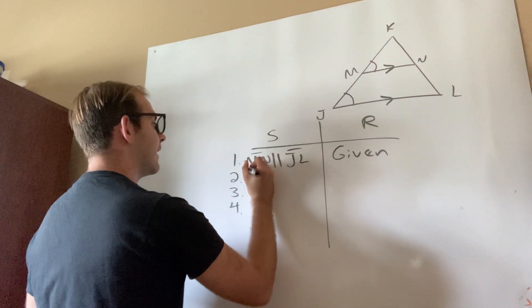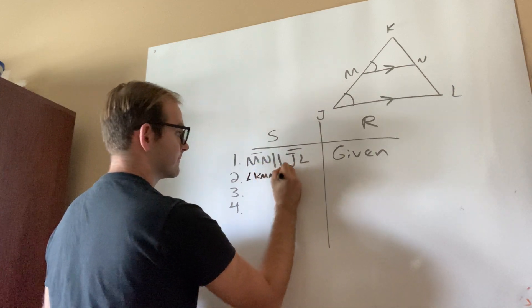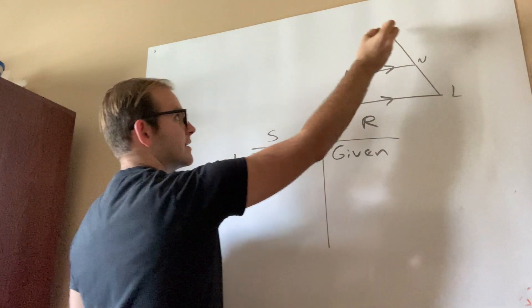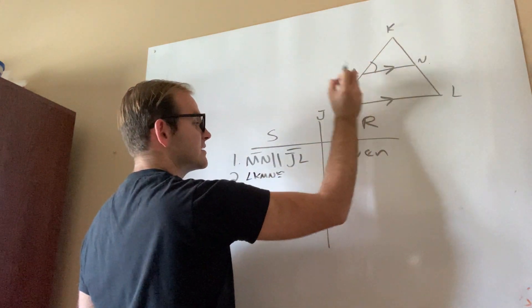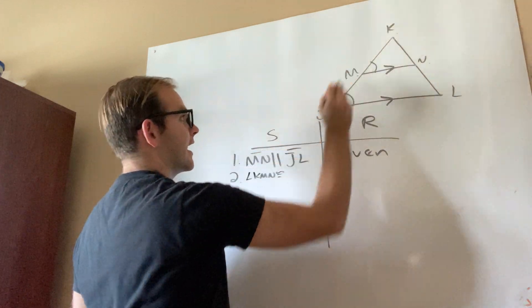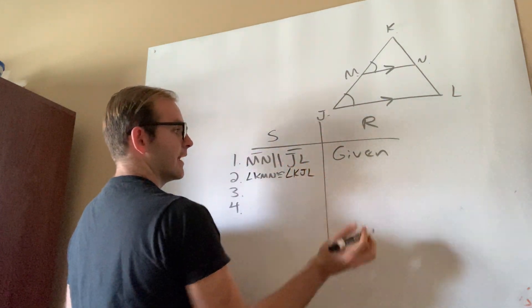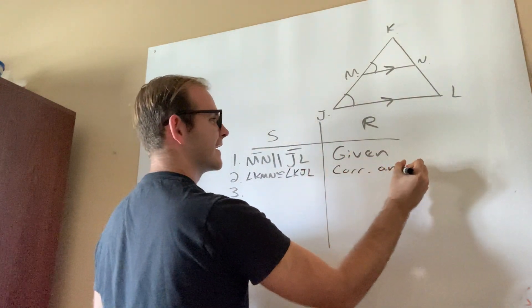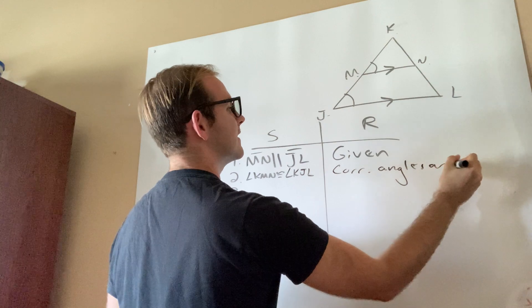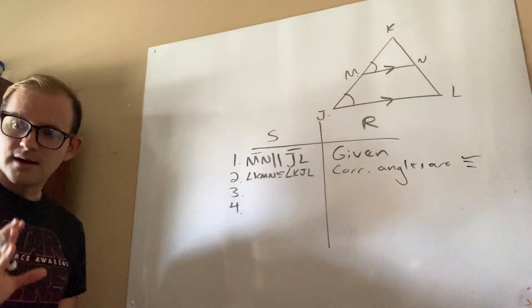So over here, I could say that angle KMN. Why is it KMN? Because I can name it using three letters KMN and M is the vertex is congruent to KJL right over here. And the reason is, well, what type of angles are they? Corresponding angles are congruent.